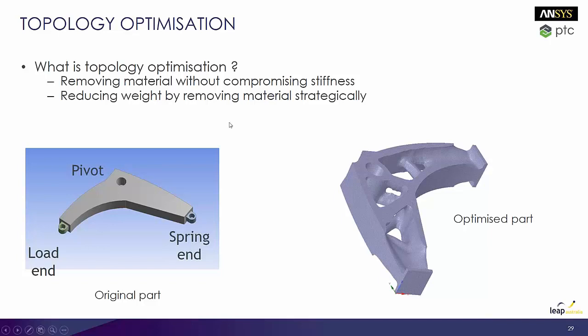With topology optimization there are some things that are built in that help you put in manufacturability constraints.